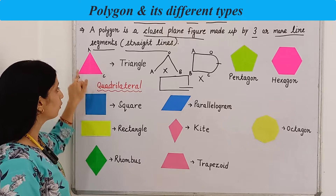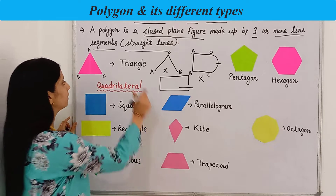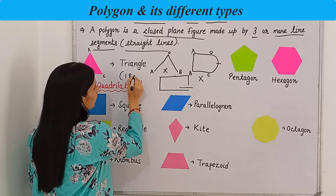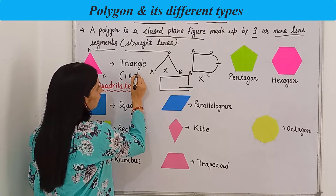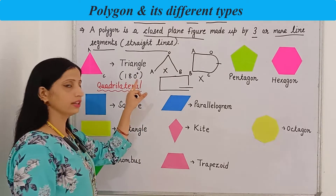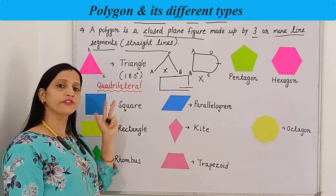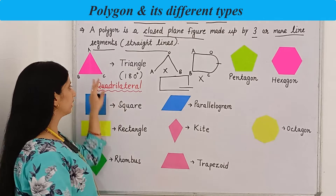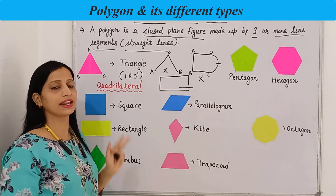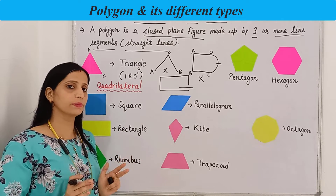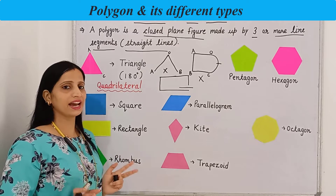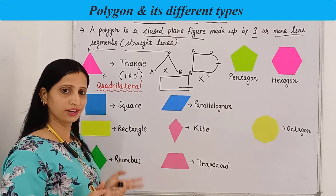The sum of all the angles in the case of a triangle will be 180 degrees. We can further classify the triangle on the basis of its angles and on the basis of its sides, which I will discuss in another video.